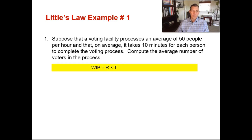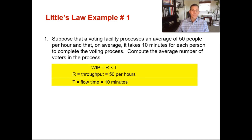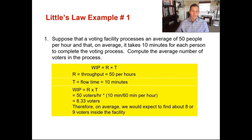Our formula is WIP equals R times T. Our R is 50 people per hour, and our T is flow time, which is 10 minutes. Since it's given in minutes, we need to convert: WIP equals 50 voters per hour multiplied by 10 minutes divided by 60 minutes per hour. So you've got 50 people per hour multiplied by 10/60 hours per person as your flow time, giving you 8.33 voters in this process at any given time.